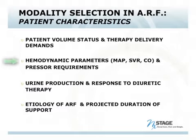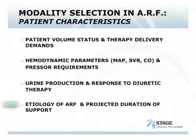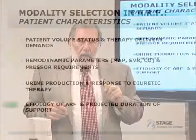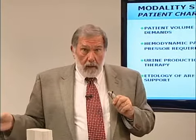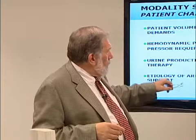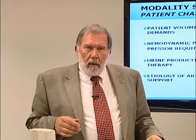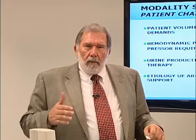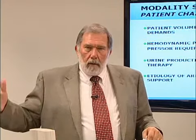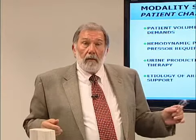The hemodynamic parameters of the patient — how stable or unstable they are — and their urine production, as we've seen, are key considerations. Then there's the etiology, which is a controversial area we'll address in a later podcast. One area of interest is that patients with sepsis or other etiologies seem to do better with continuous therapy than with intermittent therapy.